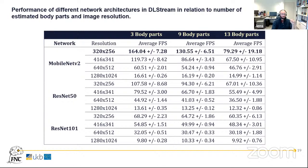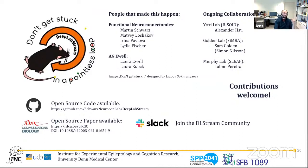As a final note, thank you to the lab of Martin Schwartz, colleague Matrey Loshakov who was the software engineer behind the project, Laura Yücel and Laura Cook from AG Yücel who were involved in the optogenetic experiment, and collaborators from B-SOID — Alexander from the Golden Lab — and the Murphy Lab and Talma Perera who helped integrate SLEAP. This is an open source project, so please check out the GitHub link. We're always happy to receive contributions, and we have a Slack channel open to anyone interested.